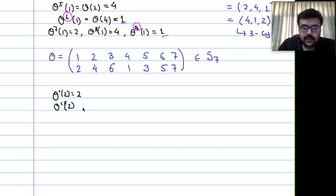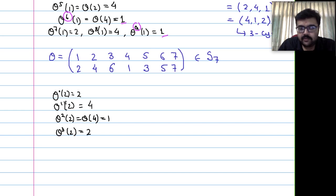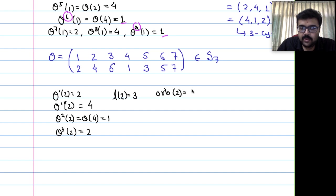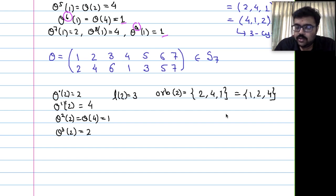The cycle of theta with respect to 2 is (2, 4, 1). This can also be written as (4, 1, 2) or (1, 2, 4) — they are all the same cycle. The orbit is the same set, and the cycle is the same cycle, just different starting points.